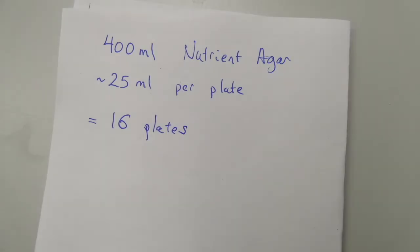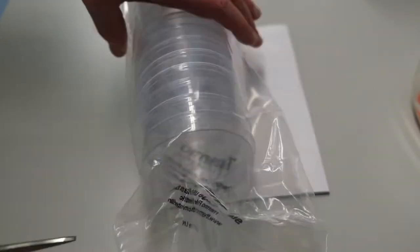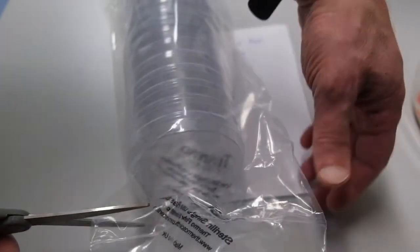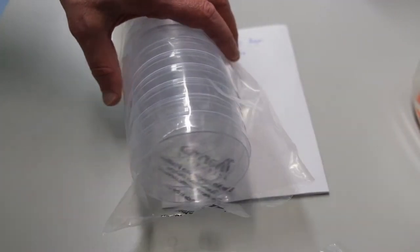With a 400ml bottle of nutrient agar, we can make about 16 plates. Plastic petri dishes come sterile in a plastic bag. We'll get 16 of them out of the bag.